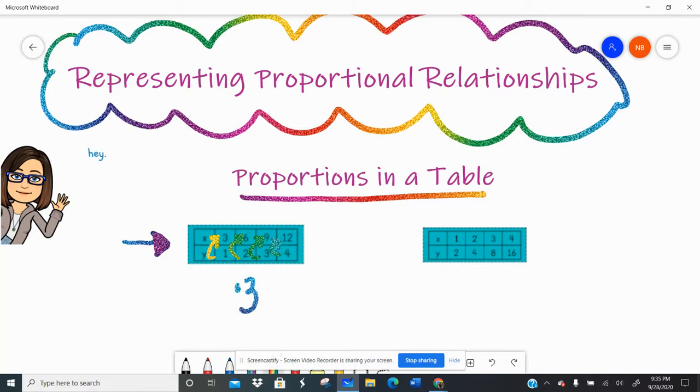Because each column kind of has the same multiplier, that common multiplier, then this would be considered proportional, right? That would be a ratio table. It is representing proportional relationships. So that one we would drag to proportional.